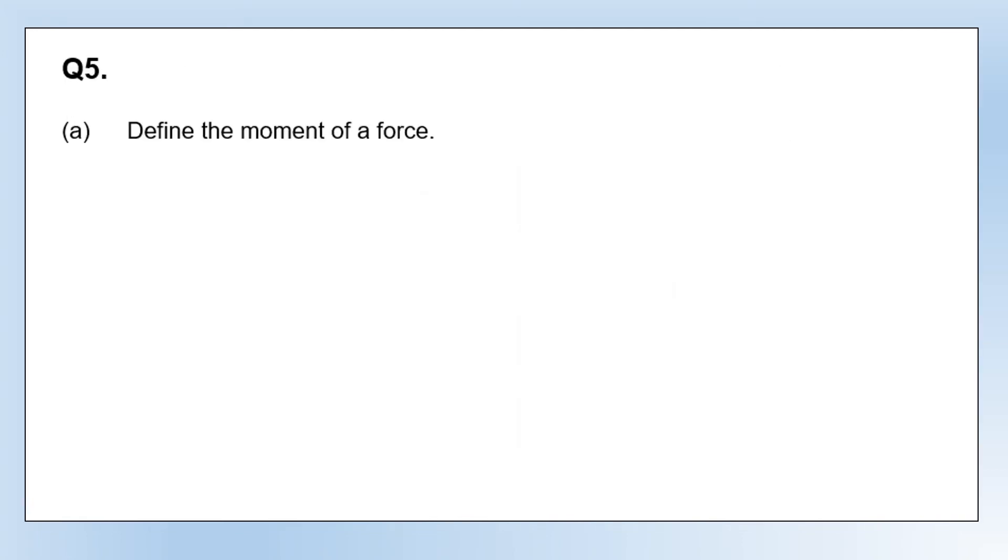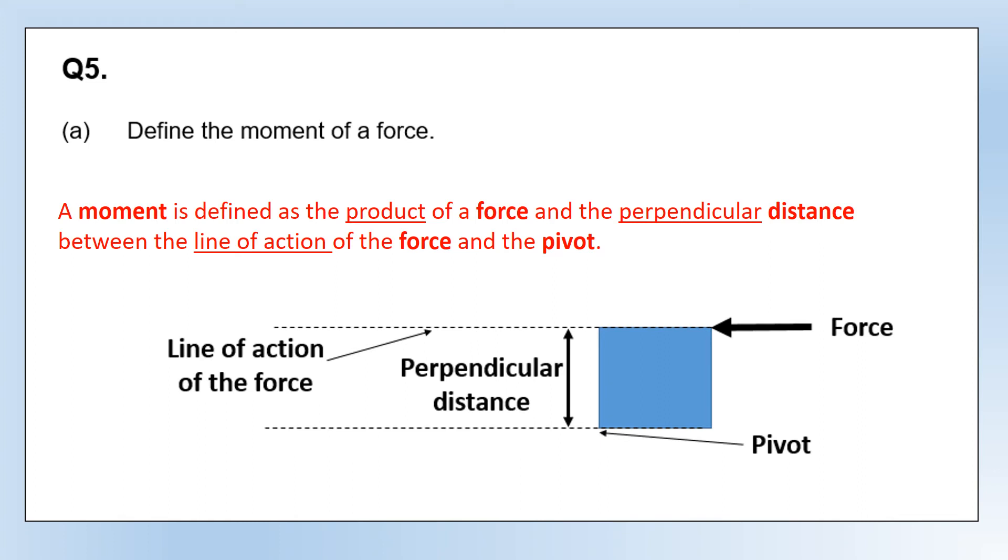Now moving on to look at some moments. First, defining a moment of a force: a moment is defined as the product of a force and the perpendicular distance between the line of action of the force and the pivot. I've illustrated each of those features on this diagram—you've got the force on the right, the pivot point at the bottom left, and the dotted lines show the lines of action. We're interested in the perpendicular distance between the pivot and the line of action.